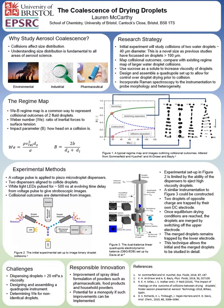Stroboscopic imaging uses a white-light LED which is pulsed for roughly 500 nanoseconds at an evolving time delay from the voltage pulse. Once the collisional outcomes are observed, they can be plotted on the regime map.